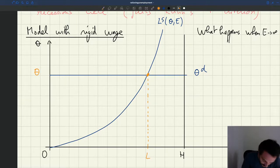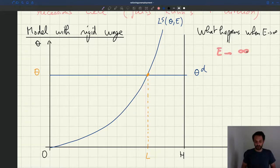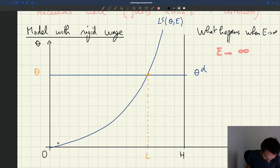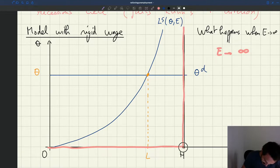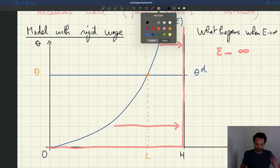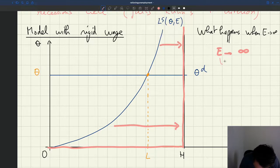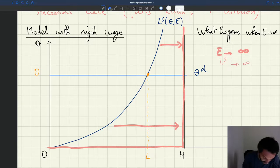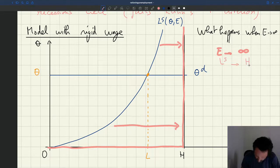And then the question is what happens when effort goes to infinity. We know what's going to happen. The demand is not going to change. The labor supply is going to be pushed as far out as possible, so your labor supply is going to look something like this. When effort goes to infinity, the labor supply goes to H. Not to infinity, it goes to H when effort goes to infinity.